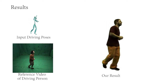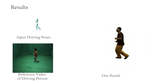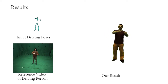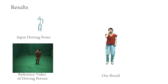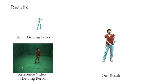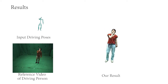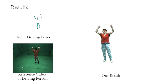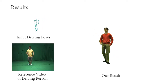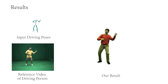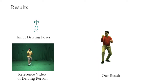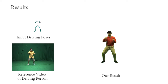Here we visualize some reenactment results. First, we show the results generated by using the test poses of our capture data as driving poses. The top left is the input driving poses and the bottom left shows a reference video of the driving person. Note that the reference video itself is only used for visualization — it is not an input to our method, as we only use the skeletal pose as input. The right side is our synthesized result. Our method can synthesize high-quality results with dynamic appearance and sharp features for various challenging poses. With only a coarse SMPL model as 3D proxy, our model is able to reconstruct different apparels with detailed dynamic features.